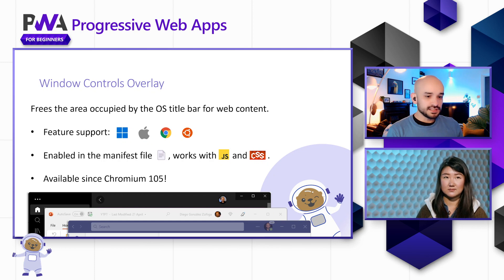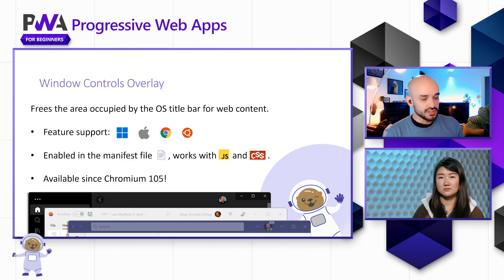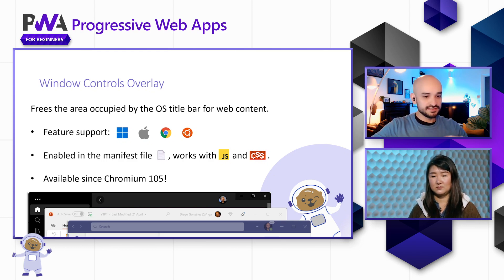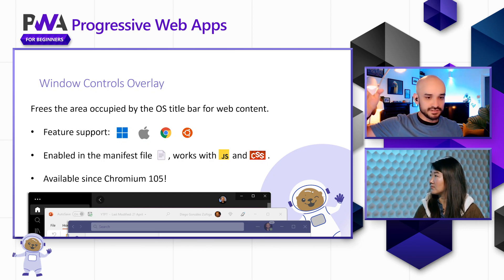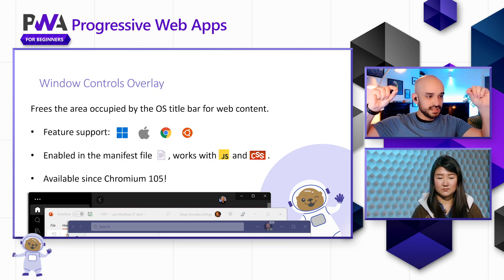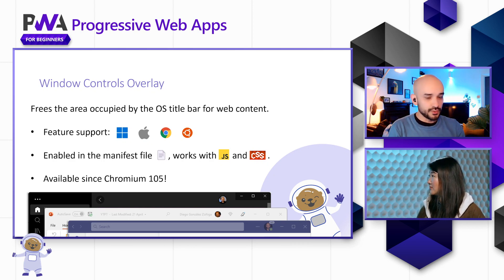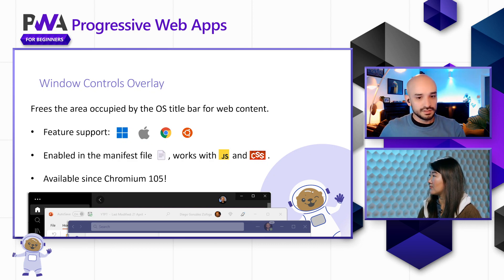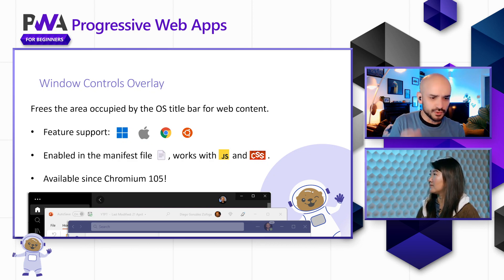The window controls overlay is a new API that frees the area generally occupied by the title bar in an operating system. When you have an open app, it has a title bar with window controls like close, maximize, and minimize — you use it to drag and move the window. With this API, developers can use all that space to create custom title bars like the ones you see in PowerPoint, Spotify, or Microsoft Teams, which have a search box, profile icon, and custom controls.